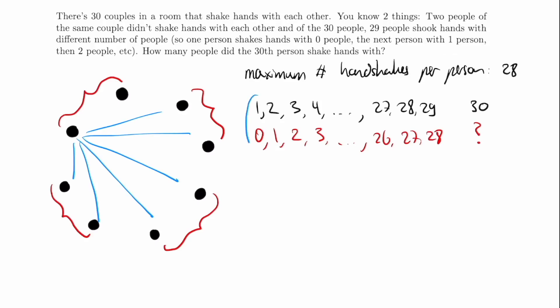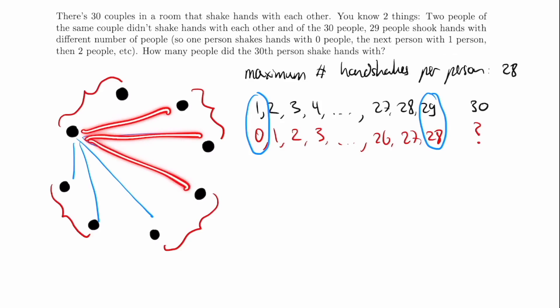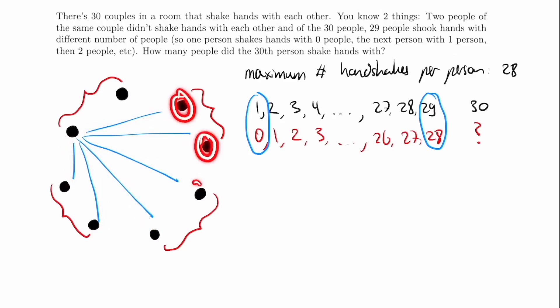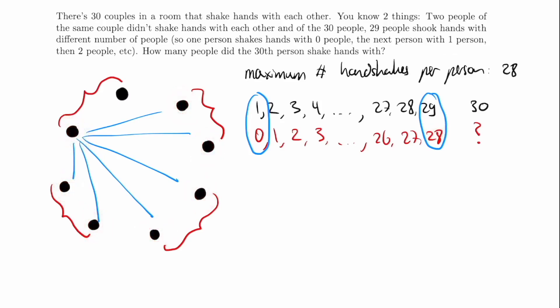Let's look at the first person and the last person: the person that shook hands with zero people and the person that shook hands with 28 people. The person that shook hands with 28 people can't have shaken hands with his spouse, so he shook hands with everyone else — all 28 people. That means all those people already have one handshake down with this person, which means the only person who cannot have a handshake with anybody else must be his spouse. So these two must be married.